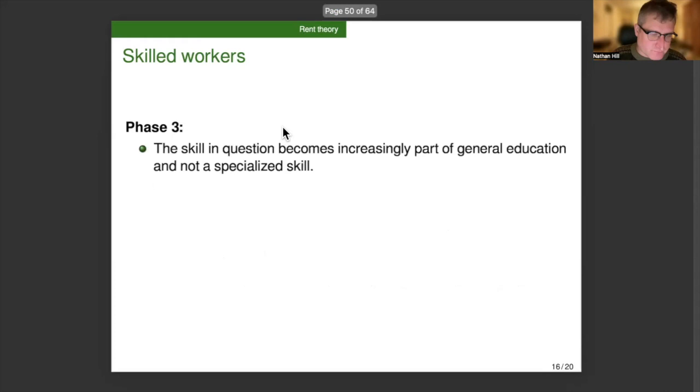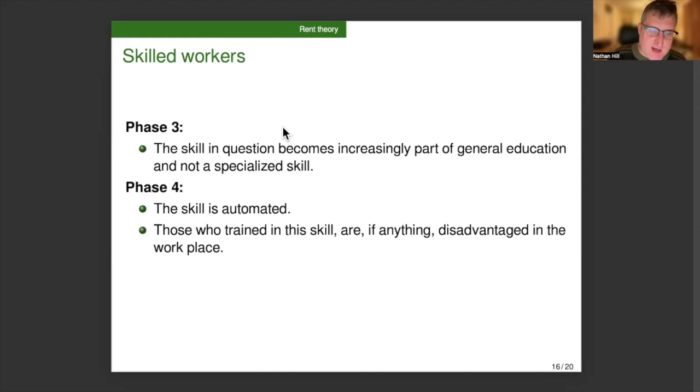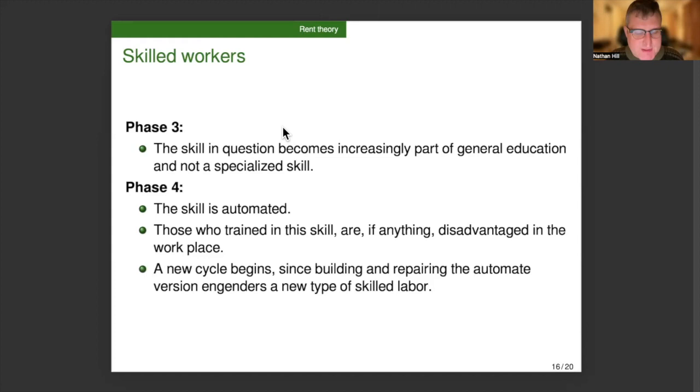In phase three, the skill in question becomes increasingly part of general education and thus is not a specialized skill. At this point, it's not skilled labor anymore. It's just normal labor. In a fourth phase, the skill is entirely automated. When the skill is automated, then those who train in the skill are, if anything, disadvantaged in the workplace. And at this point, a new cycle begins since building and repairing the automatic version of whatever the skill is engenders a new type of skilled labor. In principle, then we have this cycle, more and more skills are taken over by the machines. But then at the same time, the skill level of humanity in principle increases.